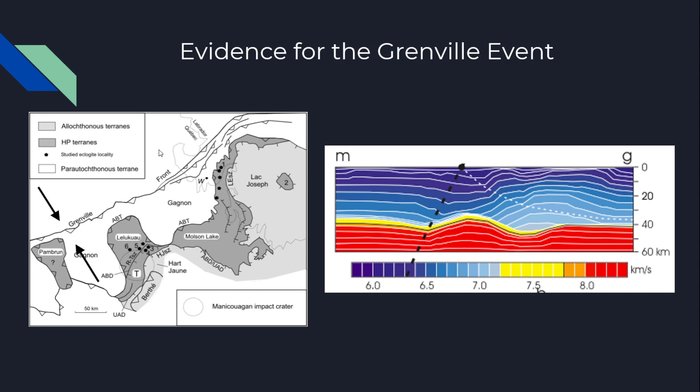We also find different lithologies at the border of the Grenville Front — the pre-existing rock as well as new rock being formed. This is the zone between the old and new rock along the convergence front, or the Grenville Front, and is evidenced through the lithologies. We can see evidence for the Grenville event both within geophysical and physical data on the earth.